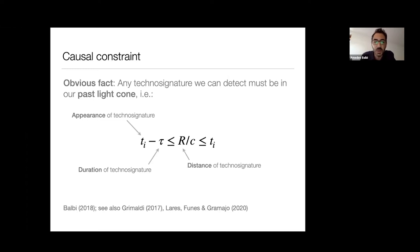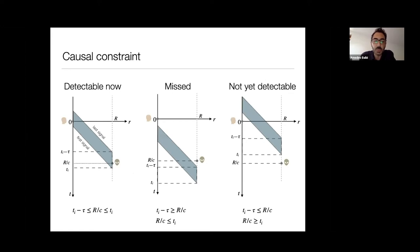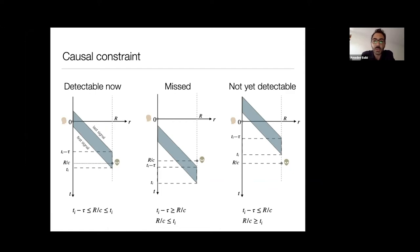This is a very obvious fact — there's nothing new here — but I think there are some interesting implications we can draw. Graphically, it's easy to see why: if you want to detect a signal now that was emitted in the past from a location at distance R from us, you have to be located within the interval between the first signal and the last signal. If this is not true, you may have missed the technosignature because it passed our location in the past, or it can be in our location in the future, meaning it's not yet detectable.